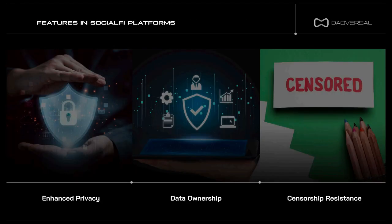Now that we've covered generally what SocialFi is, here are the features of SocialFi platforms. It prioritizes user privacy, data ownership, and censorship resistance. Number one: enhanced privacy. Blockchain technology provides the potential for improved privacy by allowing users to have control over their personal data and choose what information to share with others. This decentralized social network aims to reduce the reliance on centralized servers, limiting the exposure of user data to potential breaches and unauthorized access.